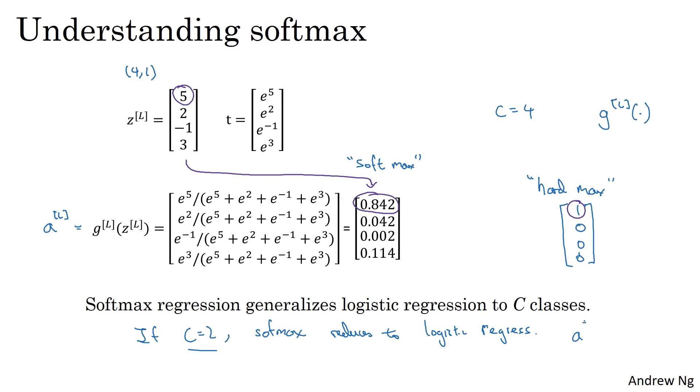If C equals 2 and if you apply softmax, then the output layer AL will output two numbers. So maybe it outputs 0.842 and 0.158. And these two numbers always have to sum to 1. And because these two numbers always have to sum to 1, they're actually redundant and maybe you don't need to bother to compute two of them. Maybe you just need to compute one of them. And it turns out that the way you end up computing that number reduces to the way that logistic regression is computing this single output.